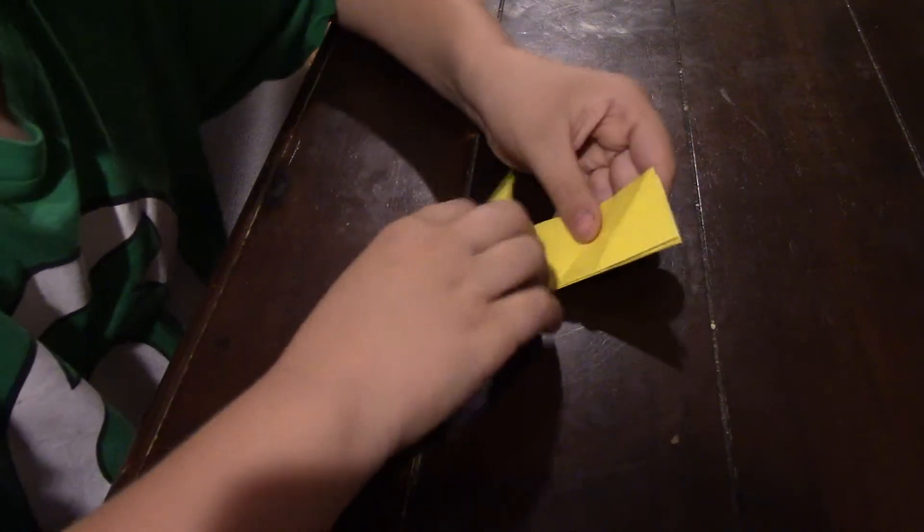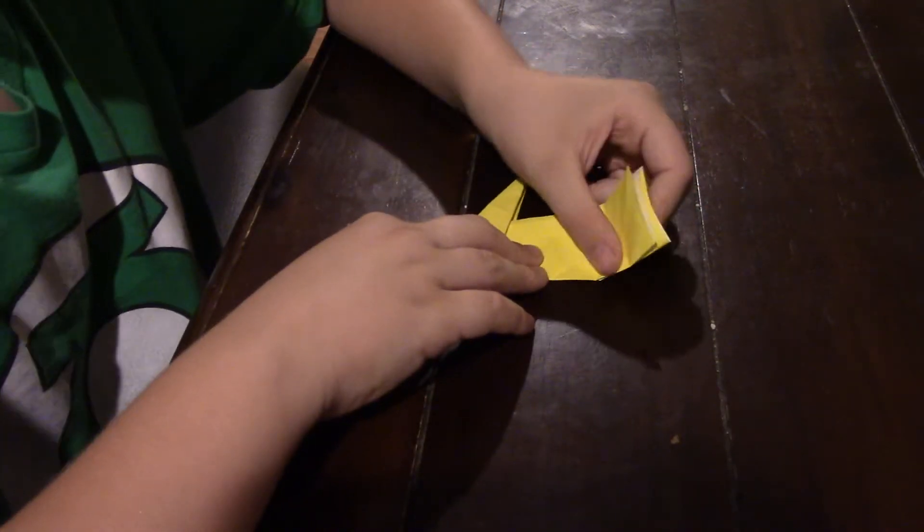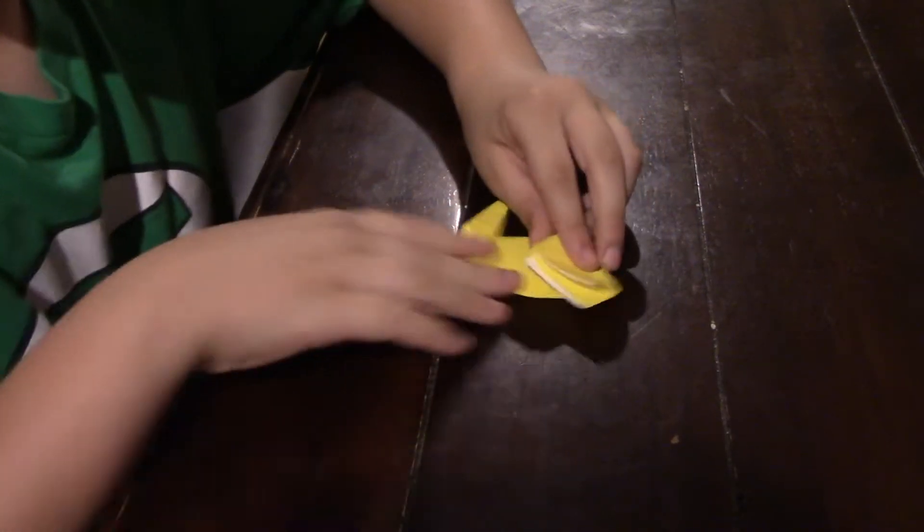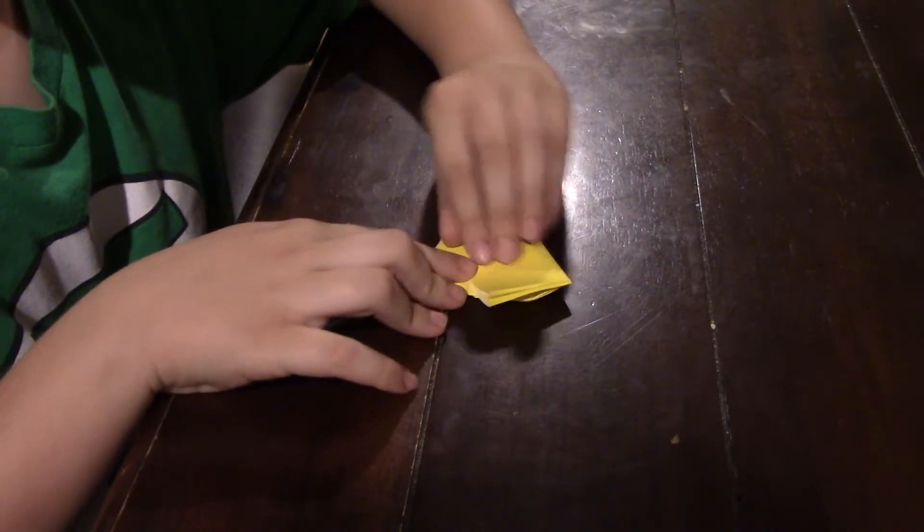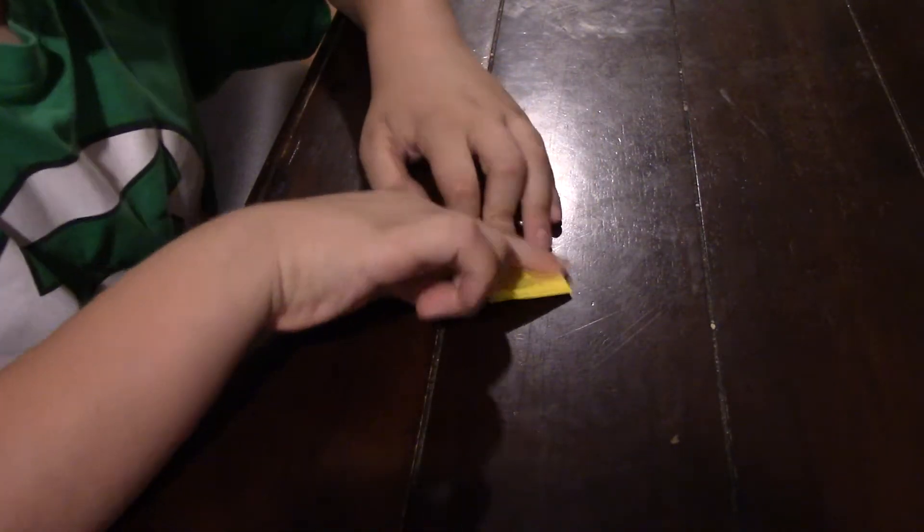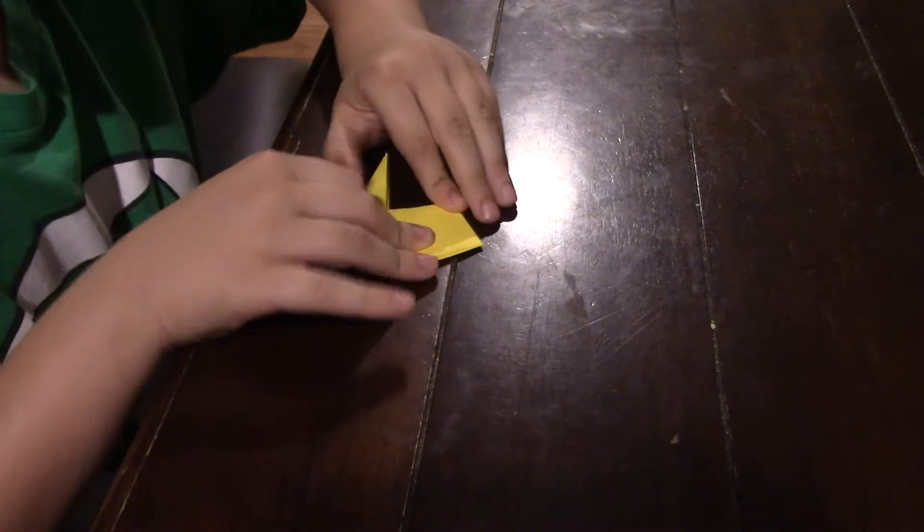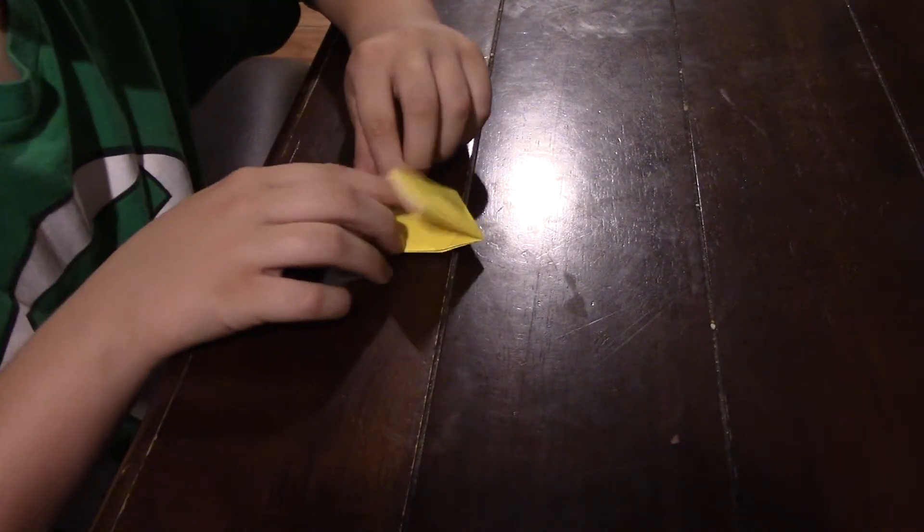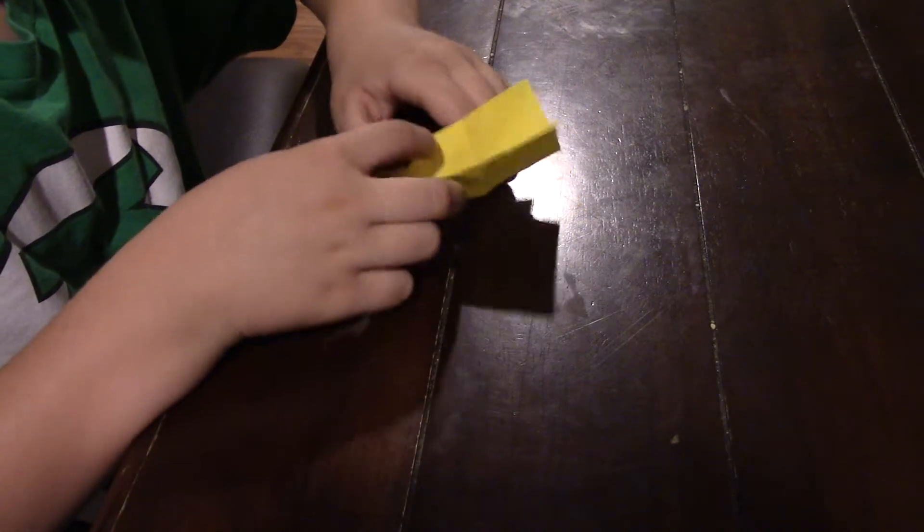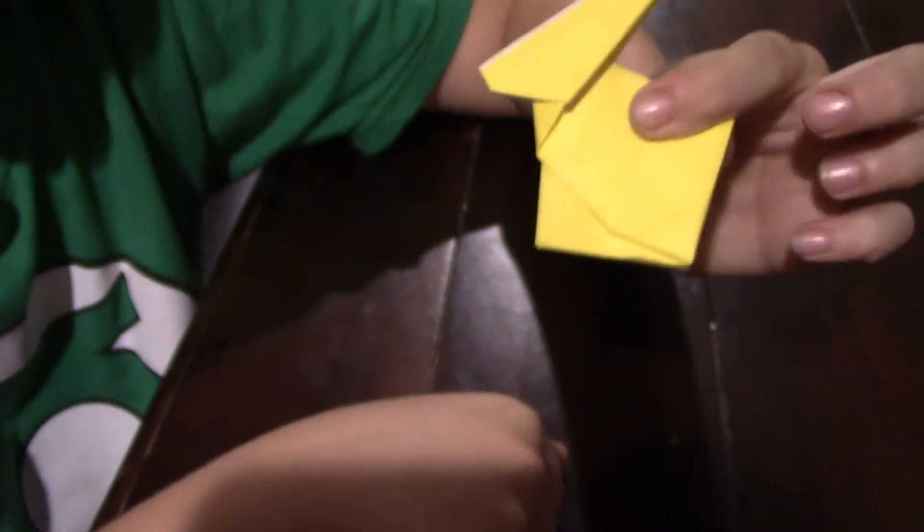Now you're going to take this back right here and fold it like this. Then unfold it. Then open this bottom and go along this crease that we just made and then refold it. We're almost done.